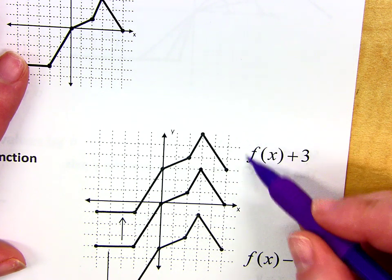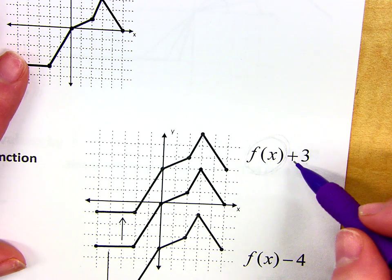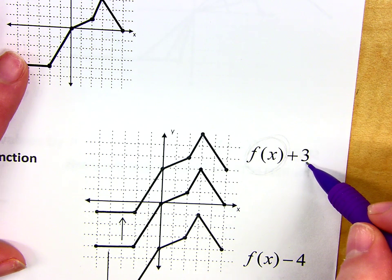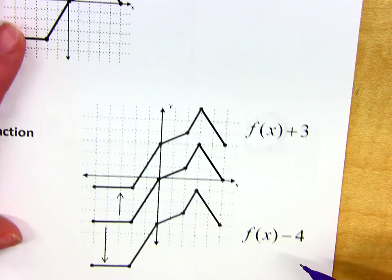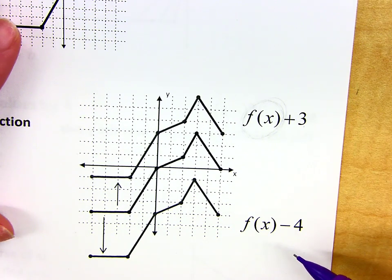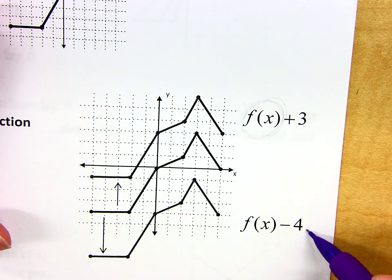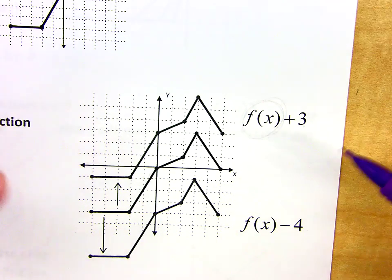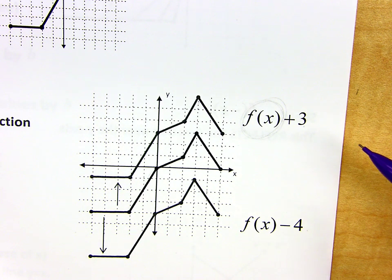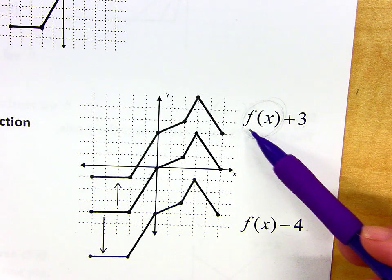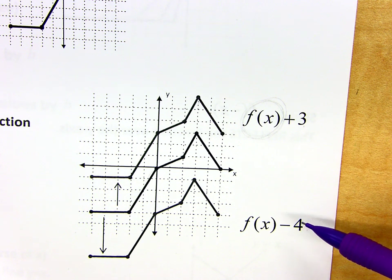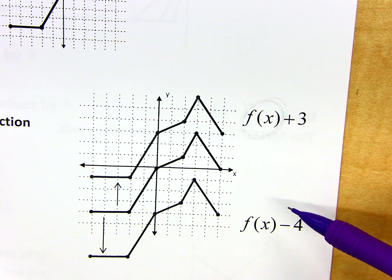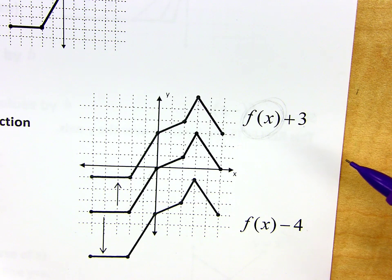So if I take some function and then add 3 to it after the fact, it's just shifting it up. Same thing happens if I subtract a value — I'm just going to move everything down instead. If I have a function and then I add or subtract a number on the end to it, that's just going to result in a vertical shift, either up or down, depending on whatever the number is.